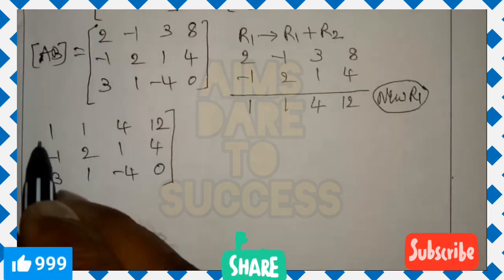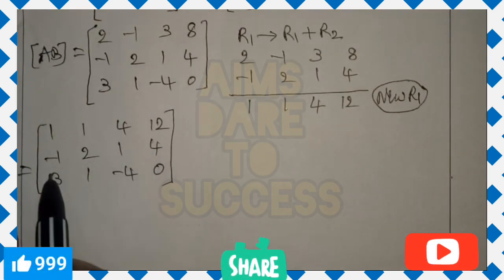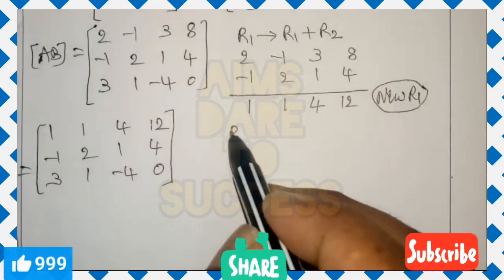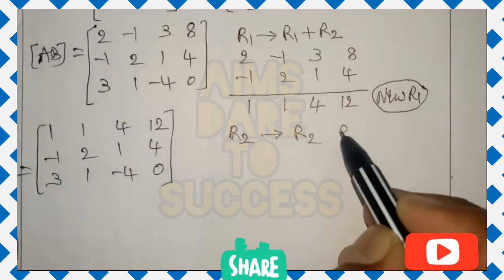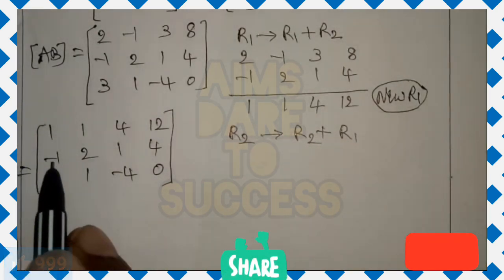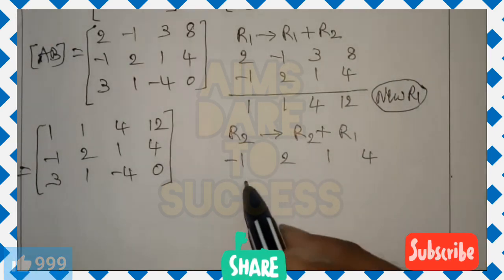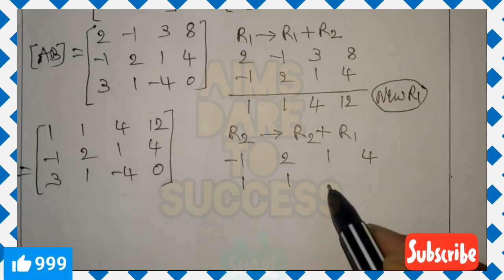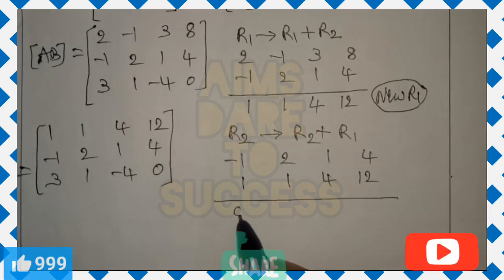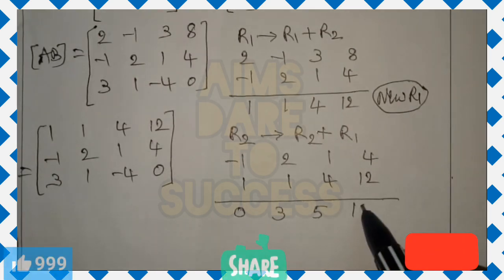After getting 1 in the first position of R1, the remaining two first-column elements should become 0 using R1 only. To change R2, we use R2 plus R1 to make the first element 0. R2 = (-1, 2, 1, 4) and R1 = (1, 1, 4, 12). Adding: -1+1=0, 2+1=3, 1+4=5, 4+12=16. New R2 is (0, 3, 5, 16).